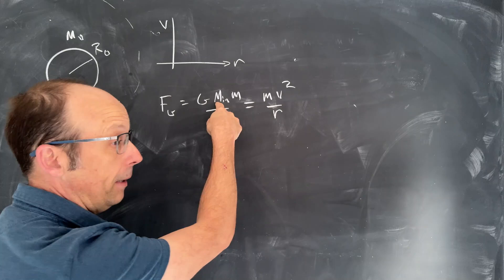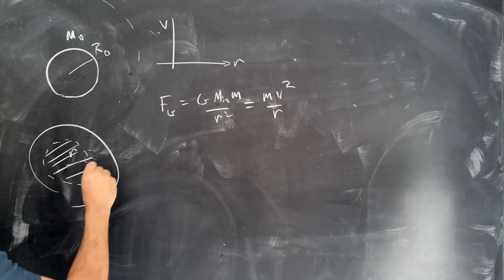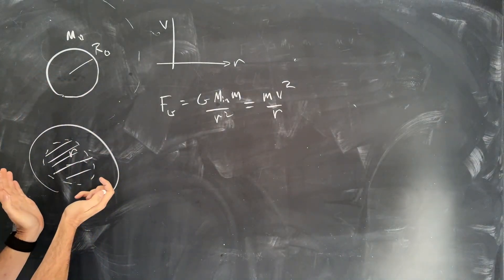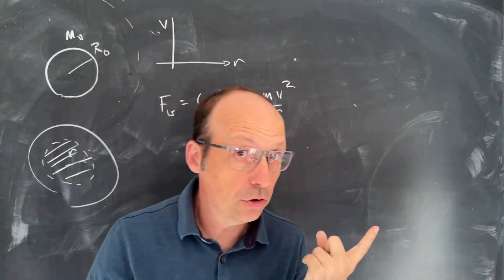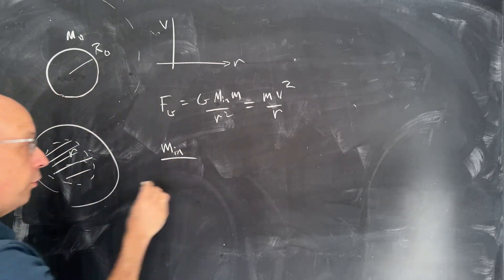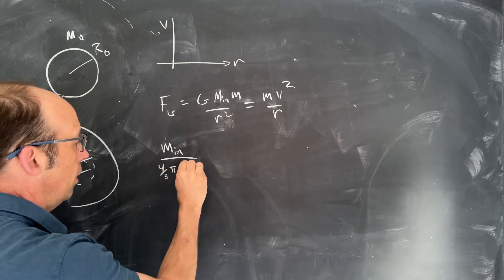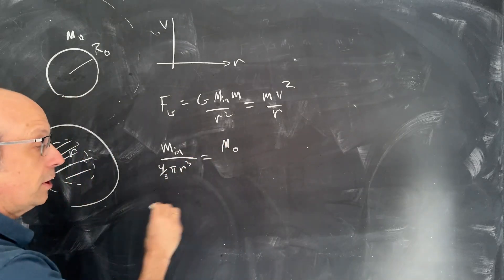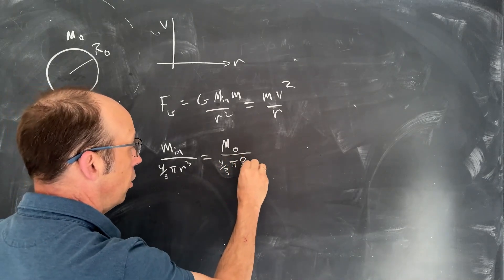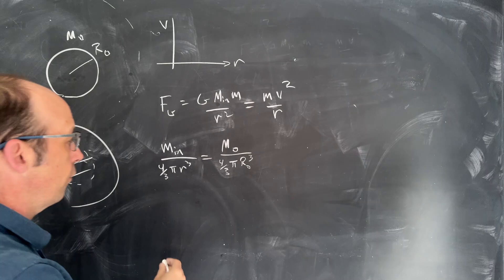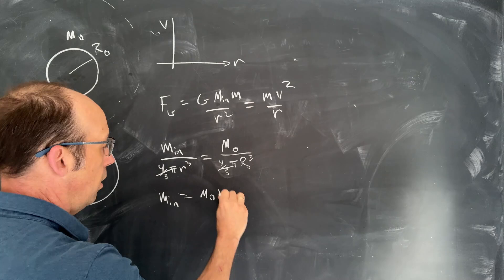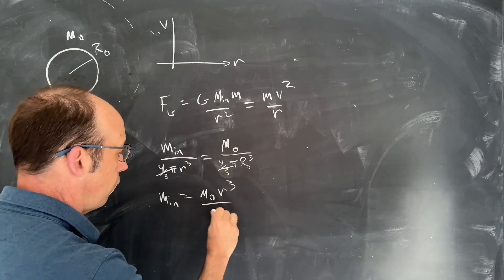So we need to find an expression for m_in from Gauss's law. So here's our m_in, it's a sphere of radius r, and this is a sphere of radius r0. So I know if the density is uniform, then m_in over that volume, which would be 4/3 π r³, is going to be the total mass m0 divided by the total volume 4/3 π r0³. And I can solve for m_in, those cancel, I get m_in is m0 r³ over r0³.